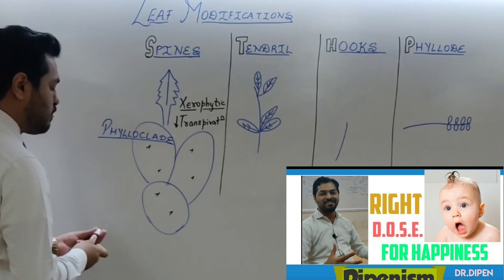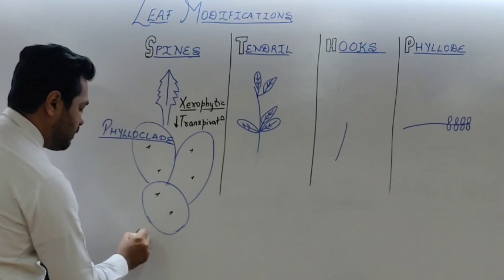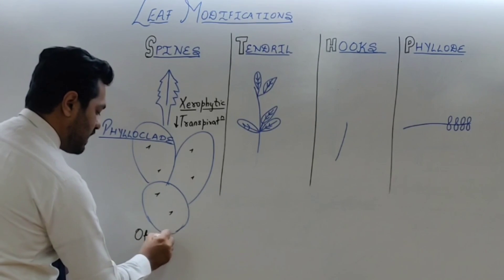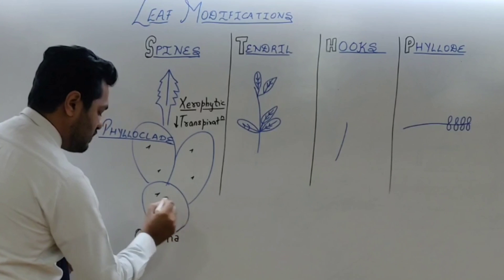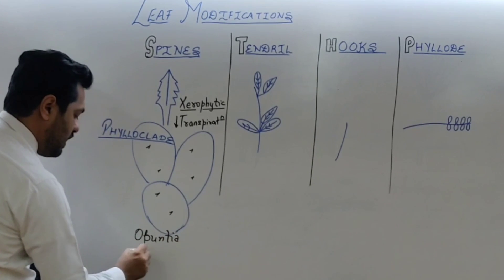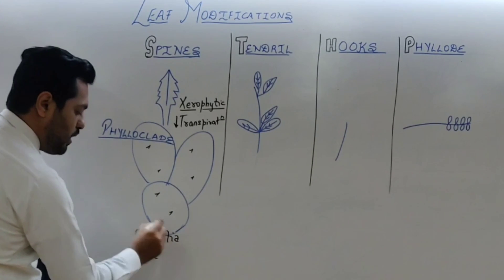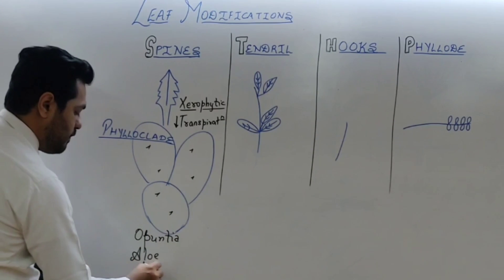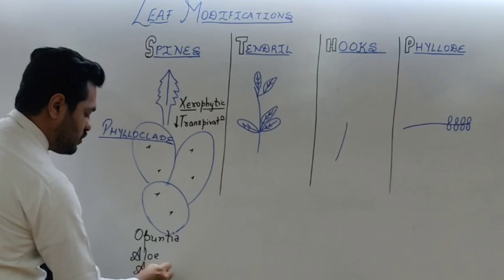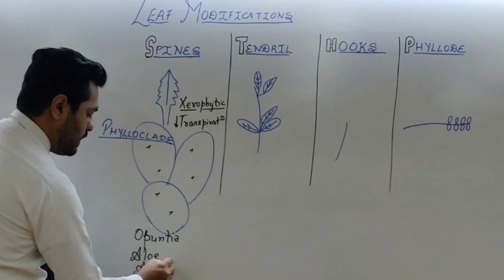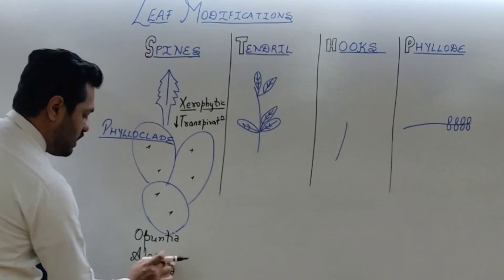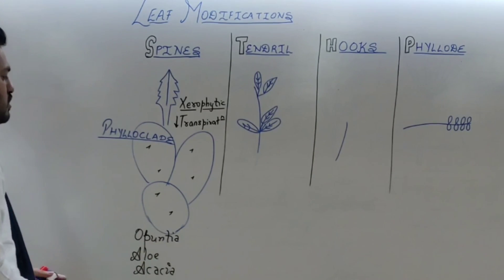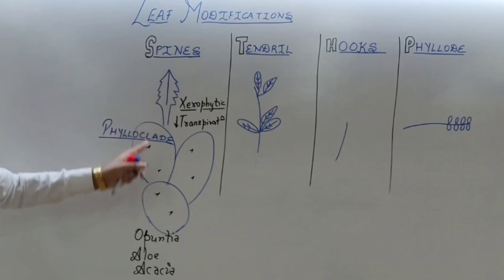Examples of such plants include Opuntia and cactus family plants, or Aloe vera, or even Acacia — the babul tree. So Acacia and Aloe vera are plants that will show the presence of leaf spines.